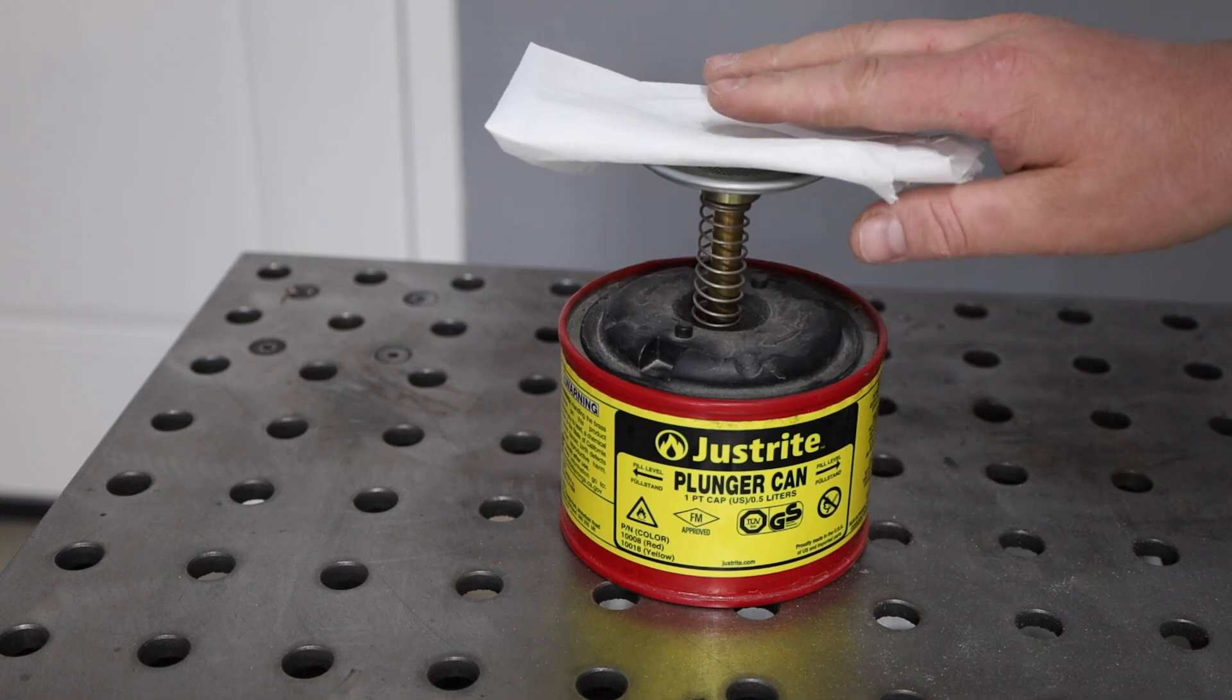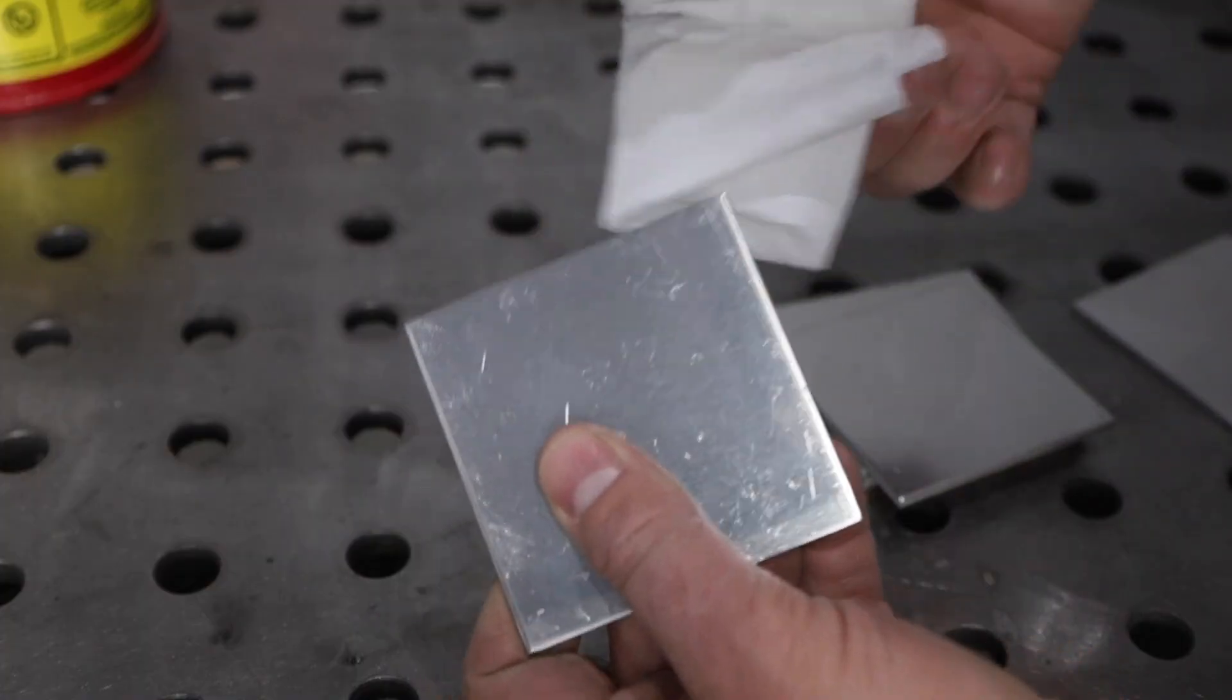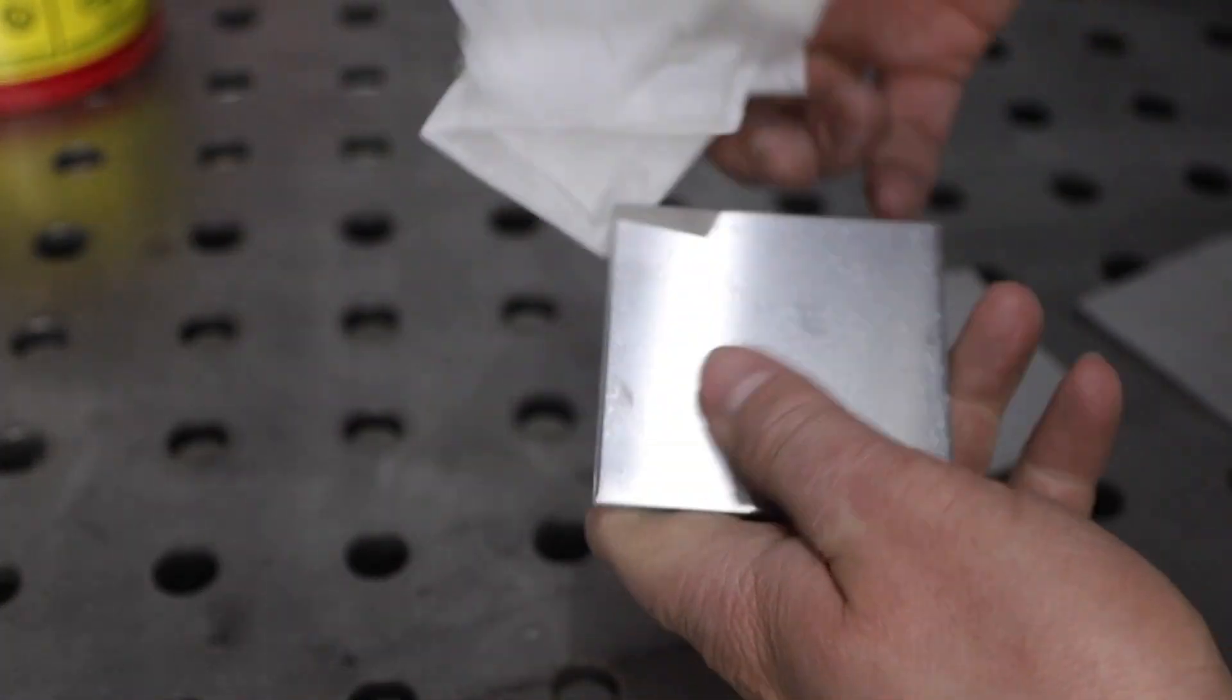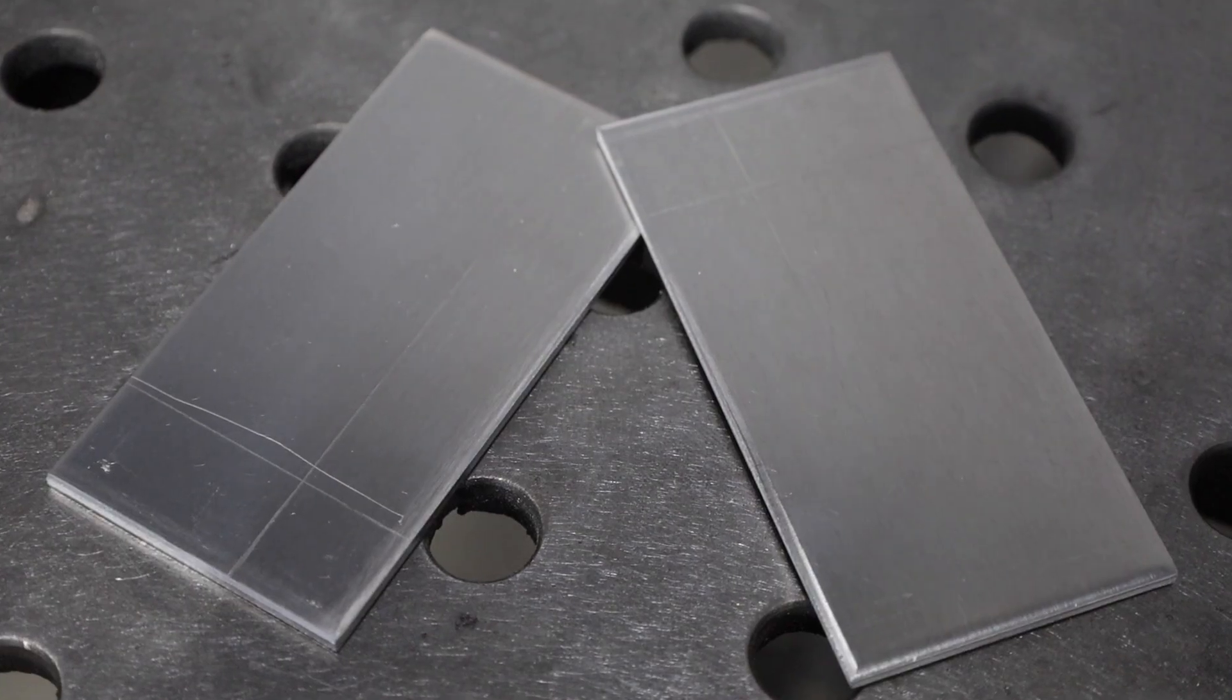I'm going to wipe everything down with some acetone on a rag, and this just gets rid of any dirt or debris. In addition to the actual pieces for my project, I prepared two coupons, and this is something I like to do whenever I'm working on an actual project is just run a quick test weld.